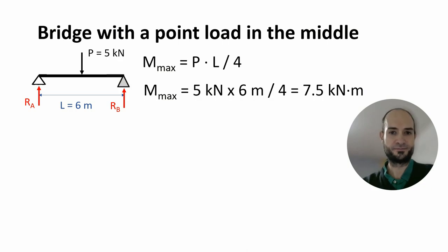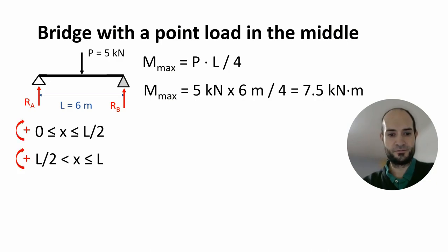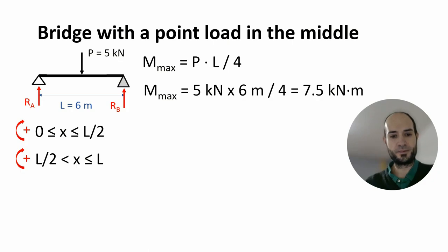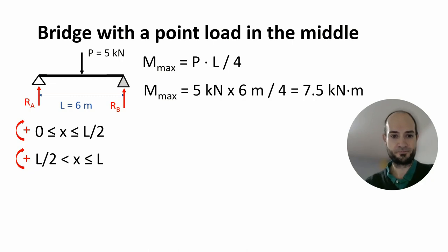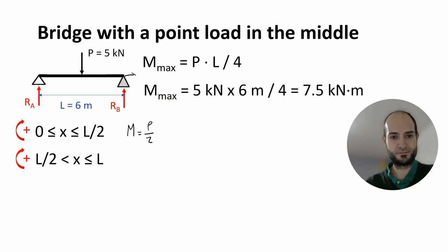But where does this equation come from? Let's find out. I'm going to calculate the moment along the length of the beam, from 0 to mid-span and from mid-span to the end. First we will need to calculate the reactions, but being a symmetrical beam, we already know that both will equal half the value of the point load. So, if I just do the moment here, it's going to be Ra — which we know is half the load — times the distance along the axis. We are calling this the x-axis, so it's going to be P divided by 2 times x.